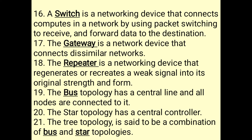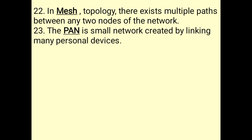A repeater is the networking device that regenerates or recreates weak signals to their original strength and form. Star topology has a central controller. Tree topology is a combination of bus and star topology. In mesh topology, there exist multiple paths between any two nodes of the network. A PAN (Personal Area Network) is a small network created by linking many personal devices.